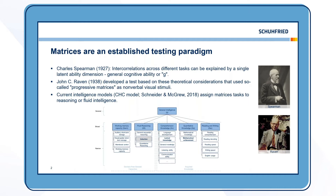A student of Spearman, John Raven, had some troublesome experiences with the test batteries measuring intelligence that were used in those days. Based on Spearman's theory, he therefore wanted to develop a test that was shorter than the tests used at the time and which was also applicable to many different groups of people. Therefore, he developed a test that used so-called progressive matrices as non-verbal visual stimuli.